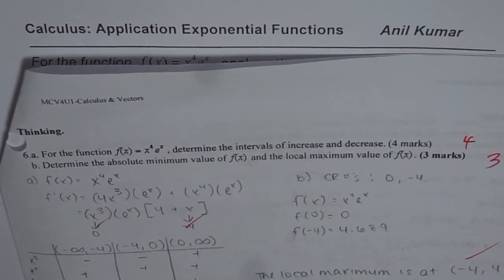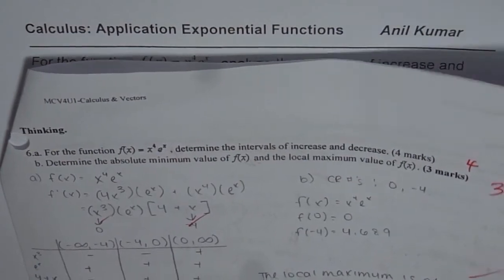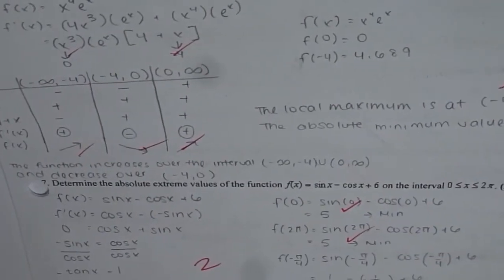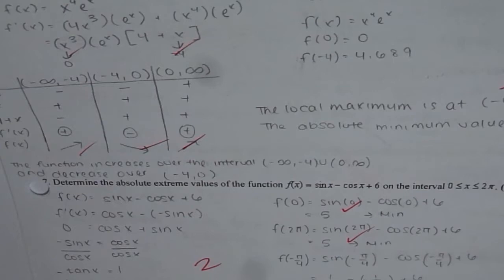For the function f(x) = x⁴eˣ, determine the intervals of increase and decrease, determine the absolute minimum value of f(x) and local maximum value of f(x). We have another question on this page: determine the absolute extreme values for the function f(x) = sin x − cos x + 6 in the interval 0 to 2π.